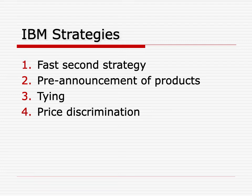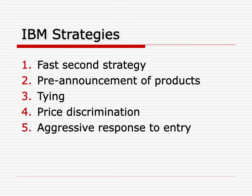A fourth strategy is price discrimination — charging different prices to different users based on their demand and willingness and ability to pay. As we've seen, this has the potential for even higher profits than an ordinary monopoly. The place where price discrimination was perhaps most clear was educational discounts for mainframe computers. Schools, compared to the military or a large company like General Motors, had much lower ability to pay. By pricing computers cheaper for schools, schools could have access to them. At the same time, giving cheaper computers to schools trained a new generation on IBM machines, making IBM even more dominant in the industry.